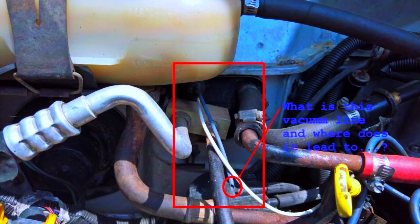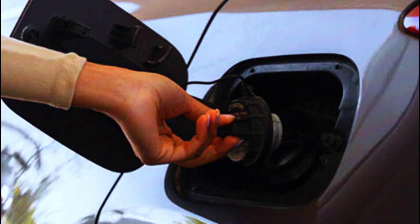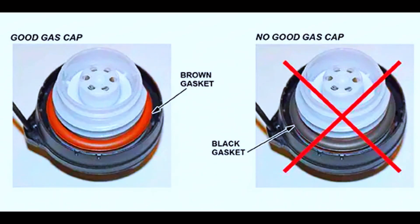Visual inspection: start with a visual inspection of the EVAP system. Check for any obvious signs of damage to the hoses or wiring that could be affecting the pressure sensor's performance. Check the gas cap: a loose or damaged gas cap can cause issues with the EVAP system's pressure, so ensure it's tightened or replace it if necessary.